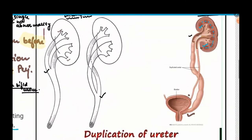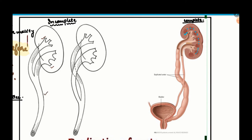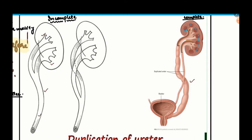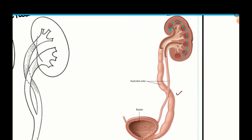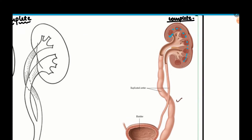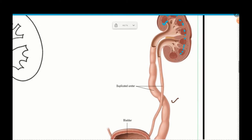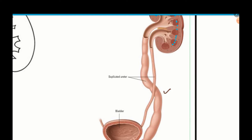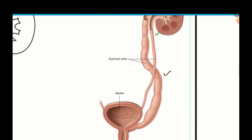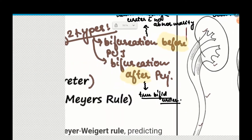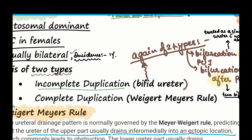Let us look at these 2 pictures. One picture shows a single ureter and the next shows 2 different ureters. The incomplete type has 2 bifurcations near the kidney that finally fuse to form 1 ureter — this is known as incomplete duplication. The complete type is when 2 separate ureters arise from the same kidney, one ending in the bladder and one ending in a site away from the bladder — this is known as complete duplication of the ureter.